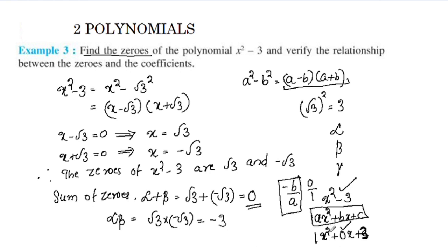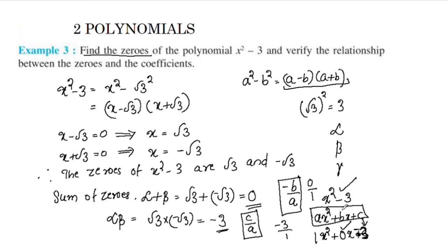The product of zeros, alpha times beta, equals c by a. Here c is negative 3 and a is 1, so the product equals negative 3. The zeros root 3 and negative root 3 multiply to give negative 3. Verified.